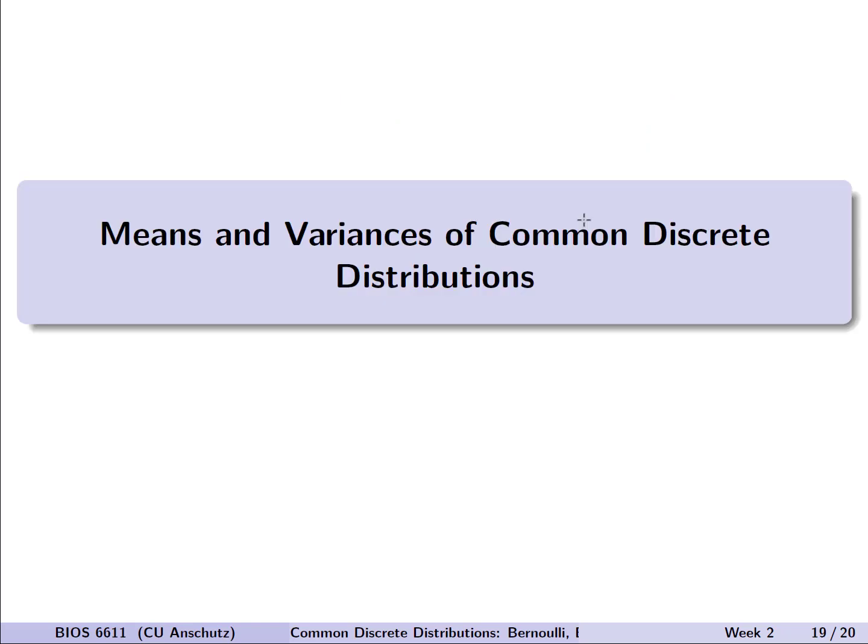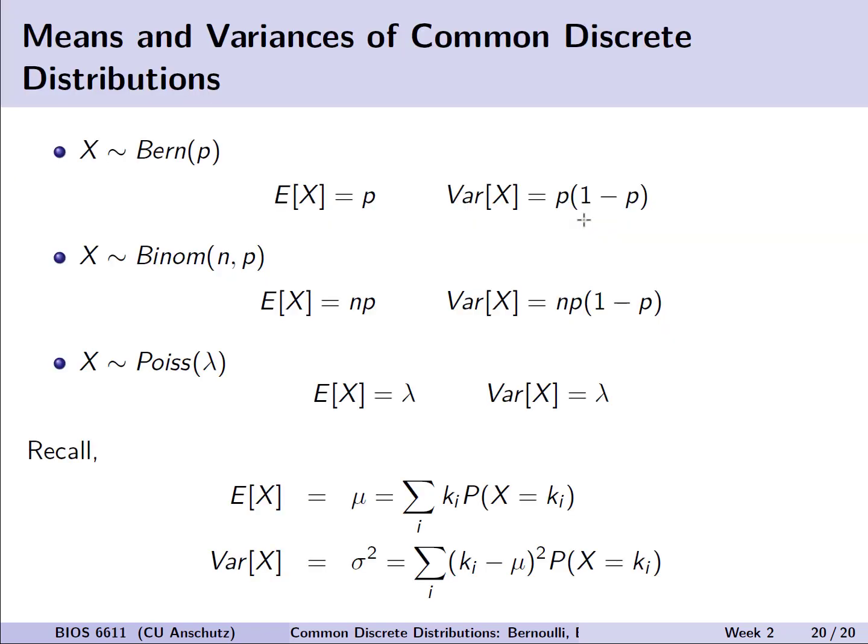As a closure, let's briefly introduce what the means and variances of these common discrete distributions are, and we can calculate by hand if needed. If X is a random variable as a Bernoulli, we see that the mean is equal to p, and the variance is p times 1 minus p.